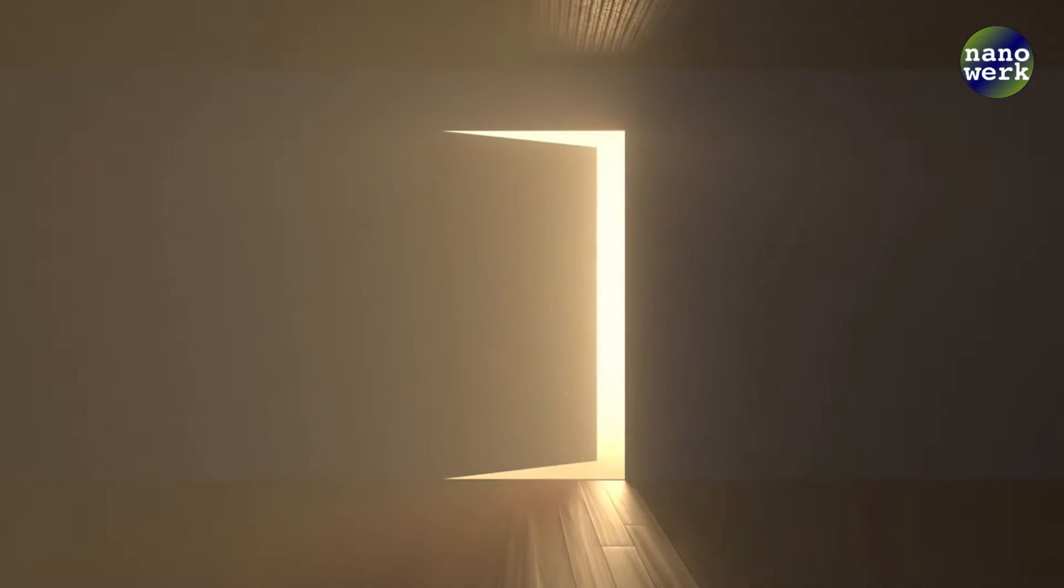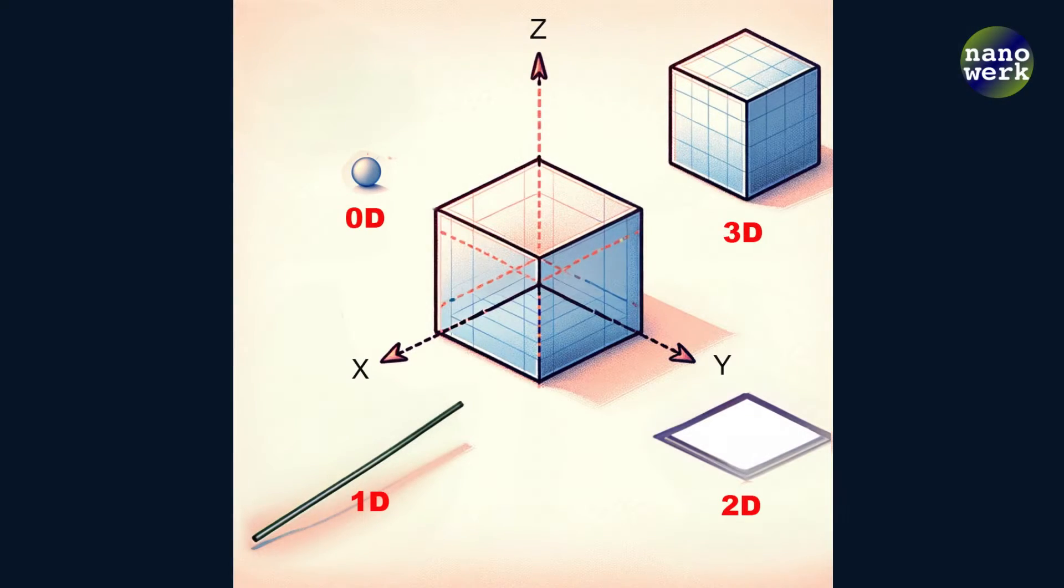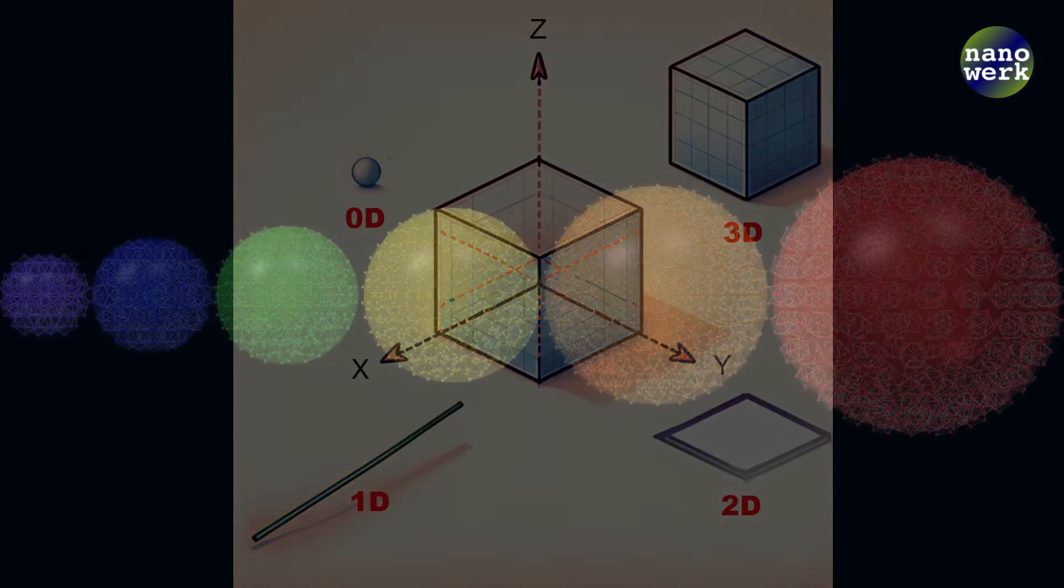Material science is creating materials with enhanced properties like more efficient solar cells, transforming how we harness energy. As you can see, quantum confinement is not just a microscopic wonder, it's a doorway to groundbreaking advances in material science and technology. Now let's come back to our dimensions that we talked about in the beginning.